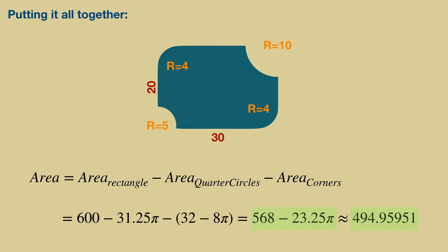Now putting it all together, we should have the area of the red quarter circles and corners removed from the area of the rectangle. We get 600 minus 31.25 pi minus 32 minus 8 pi, which becomes 568 minus 23.25 pi, or approximately 494.95951.